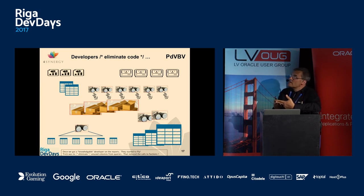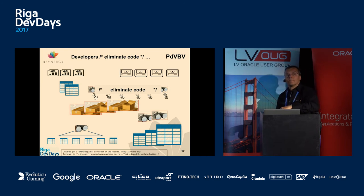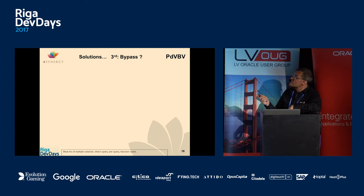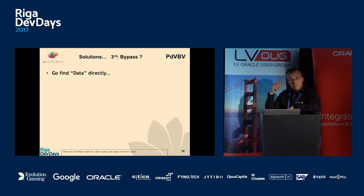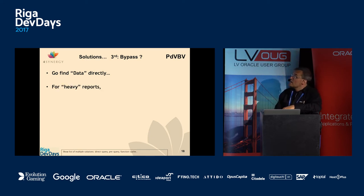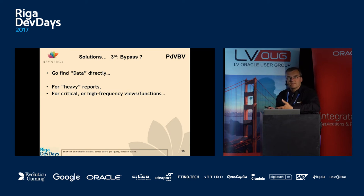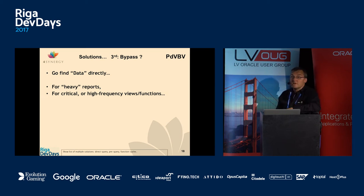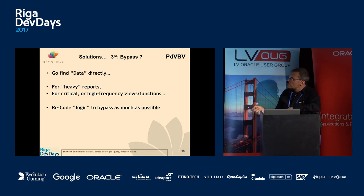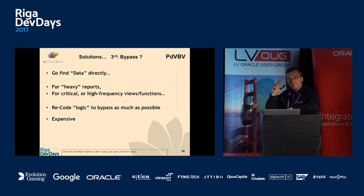That was our second solution. The third solution: can we bypass something? Remember that complex slide with all the layers — go find your data directly, don't use too many views, try to eliminate the packages. For heavy reports and critical high-frequency queries, Oracle will tell you which queries fire frequently and which objects get queried most. Use AWR, OEM, or lab128 — your AWR reports will tell you where your hotspots are. We recoded some logic to bypass those layers.